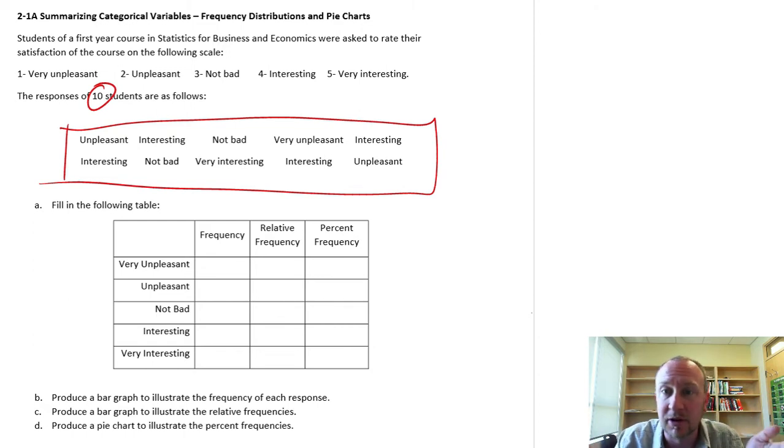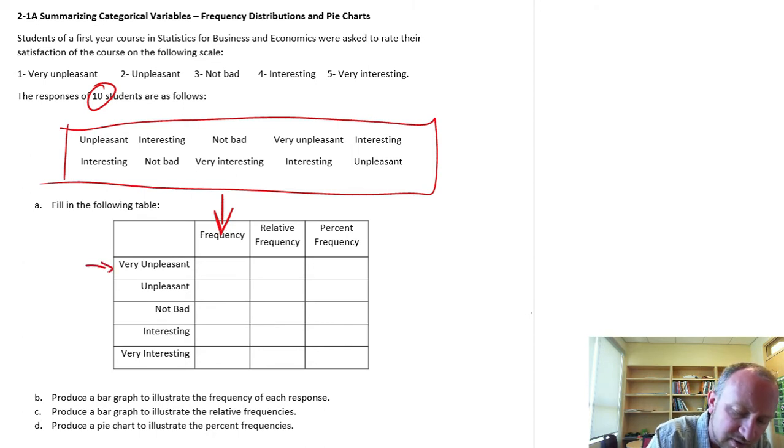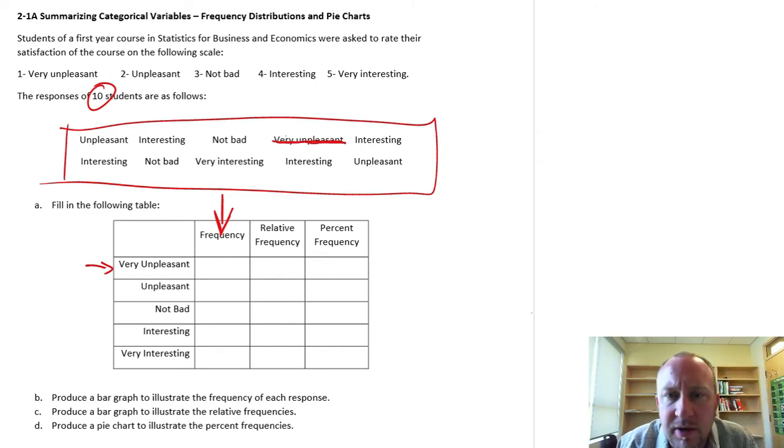We'll work with a small sample set of just 10 observations to keep things simple. The first thing we're going to do is count how many times each particular response occurs within that data set. So I'm looking at this first column where we're going to count frequency of responses. How many students found the course to be very unpleasant? Hopefully not many. Here I have one. As I see them, I'm going to cross them off.